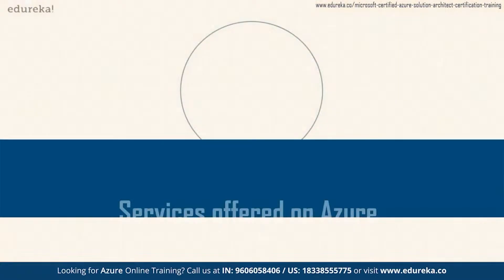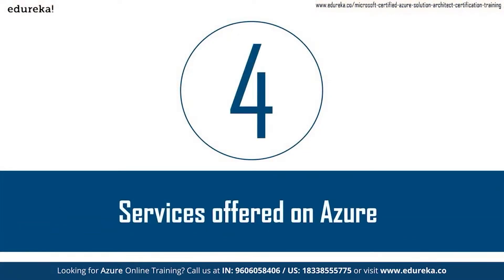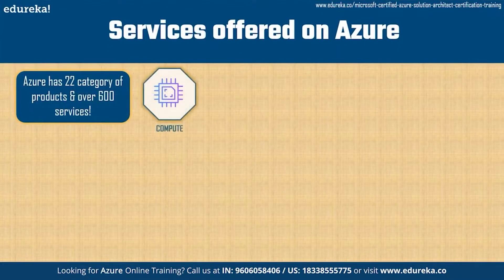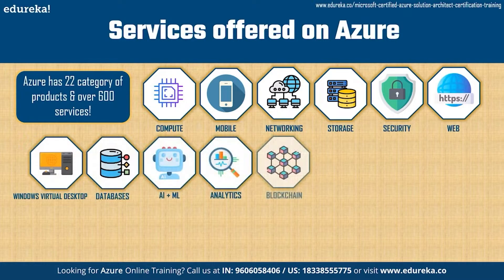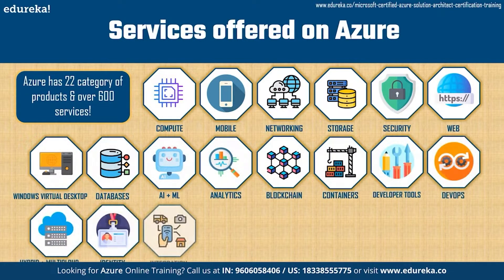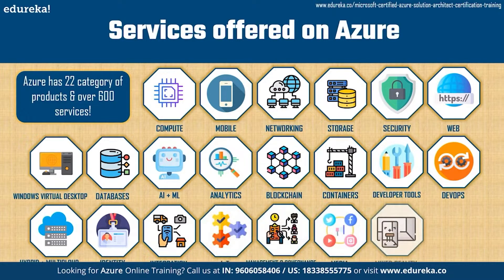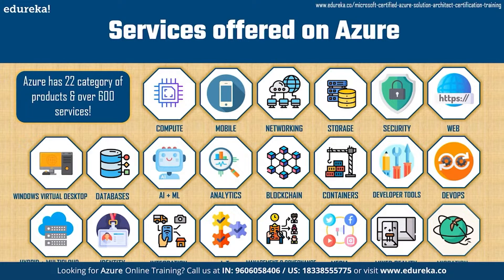Now let's move on to the services offered on Azure. Azure has 22 categories of products and over 600 services. We're not going to be able to discuss all 600 services, so here's your homework: go to Azure's website and check out each of these categories and read up on them. If you have any questions, comment down in the section and we'll be happy to answer them.